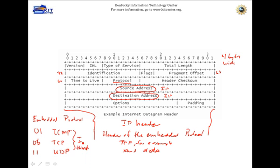So this protocol field tells the stack what to expect and how to decipher what comes past the IP header. The main thing we're interested in here is source IP address and destination IP address, and I'll show you how we're going to use those in this class.